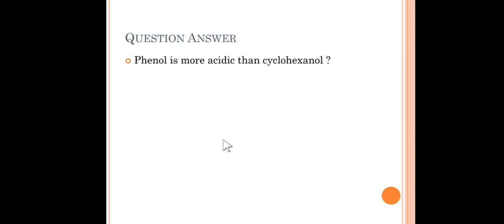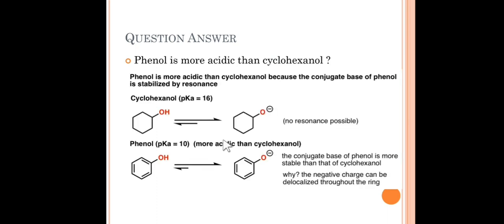The first question is: phenol is more acidic than cyclohexanol. In phenol and cyclohexanol, the difference is that the OH group in phenol is attached to a benzene ring, whereas in cyclohexanol, the OH group is attached to a six-membered aliphatic cyclohexane ring. Phenol is more acidic than cyclohexanol because the conjugate base of phenol is stabilized by resonance.